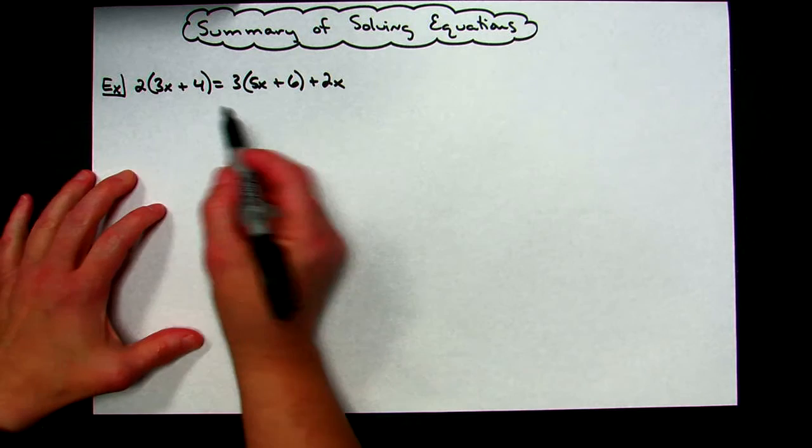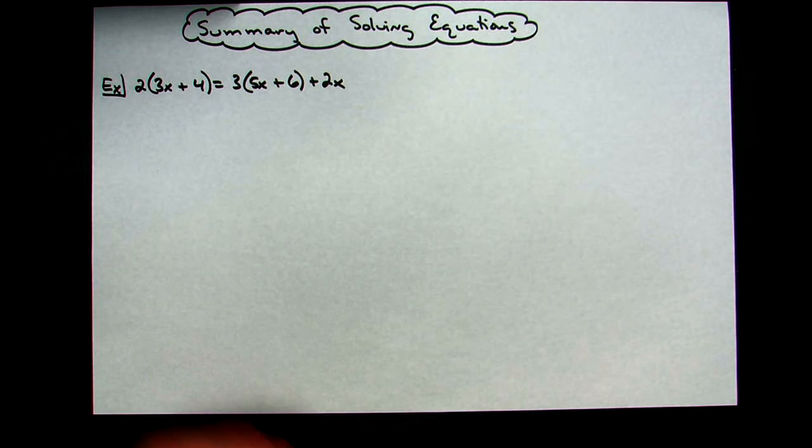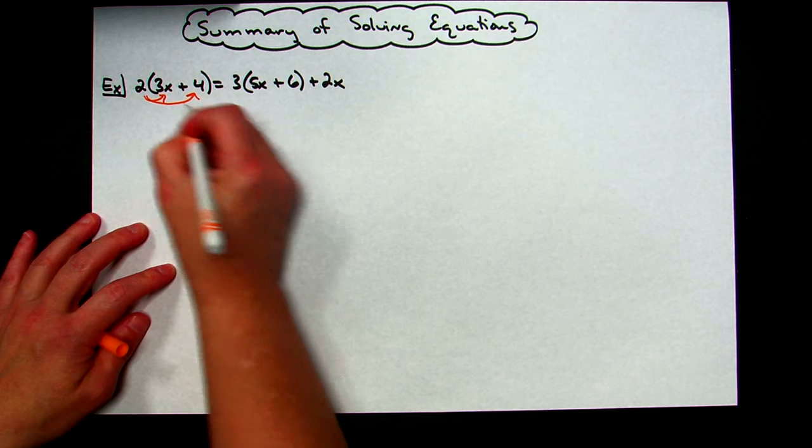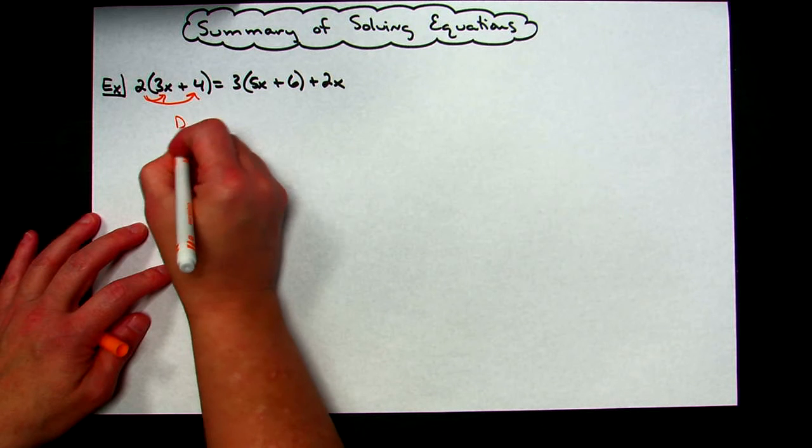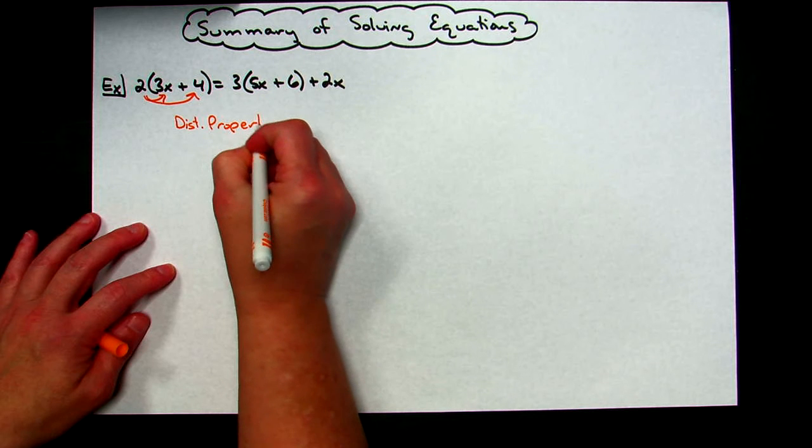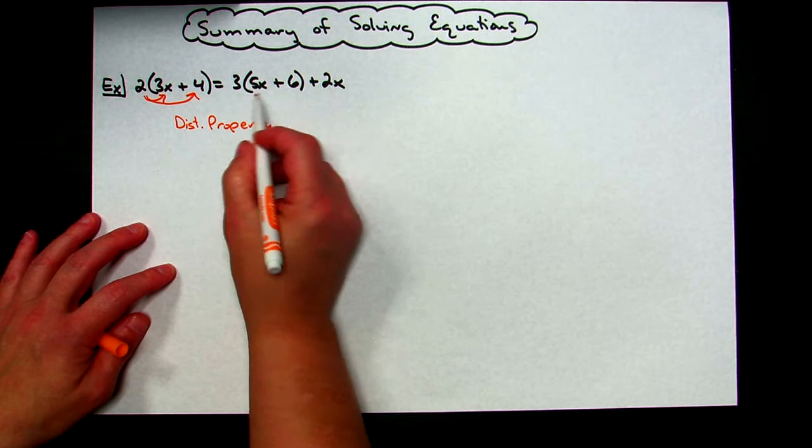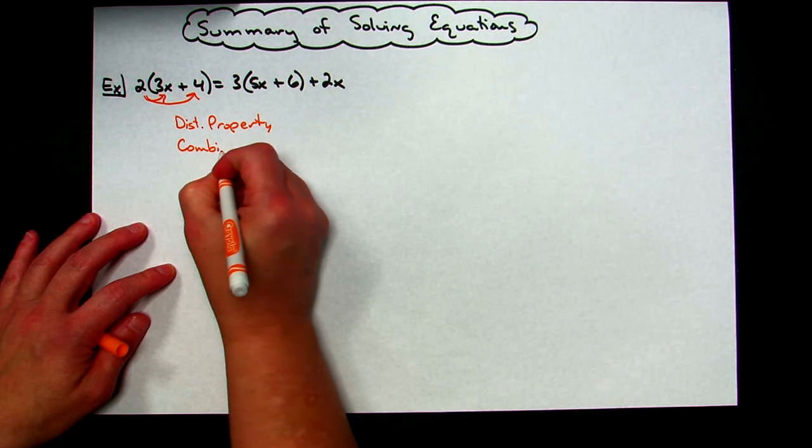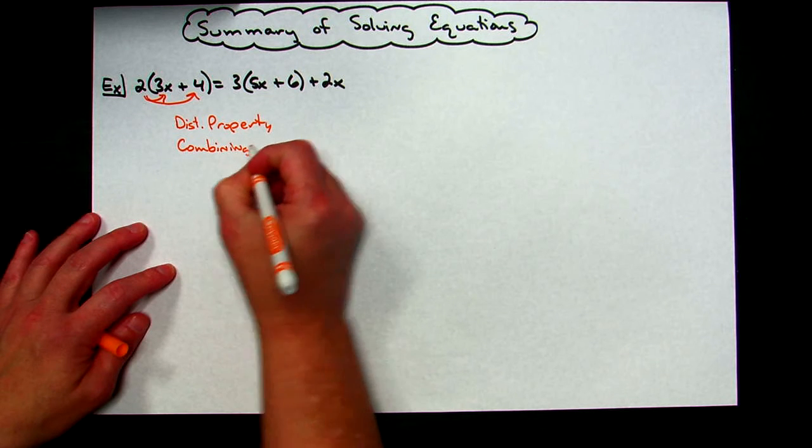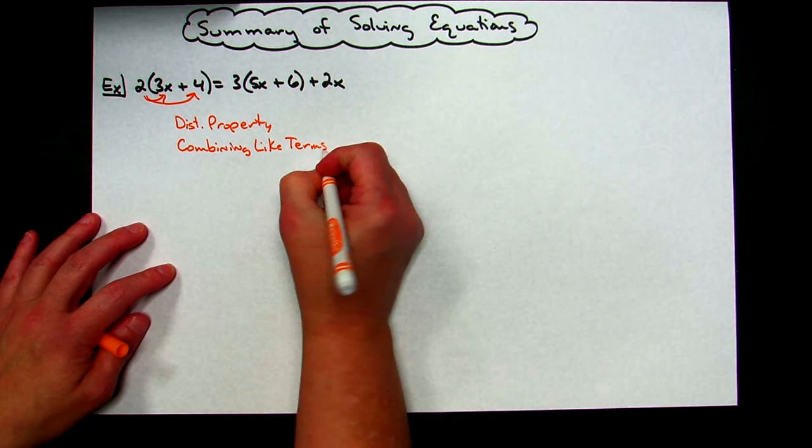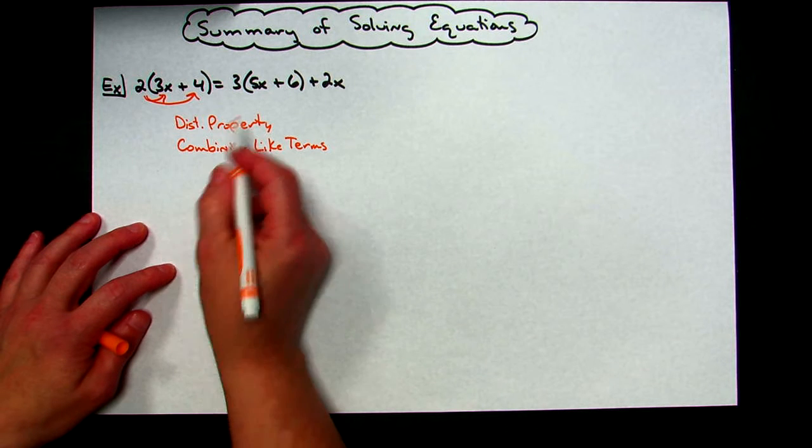This type of equation right here would involve doing things like distributive property. So you would distribute any time that you see those, so let's list distributive property. Okay, you would also need to combine like terms. On this right hand side you would have some like terms you would need to combine, so you would use combining like terms as a skill to help solve this. And then ultimately you would just need to move x to the left and all the numbers to the right.